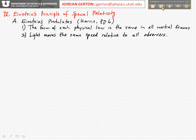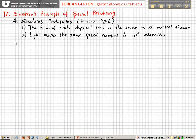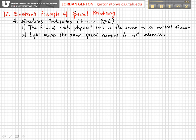Note that postulate two follows from postulate one if we accept the fact that the speed of light is a physical law. When Einstein formulated these postulates, he just assumed or inferred this, but it wasn't rigorously proven. Since then, there have been numerous experiments that have investigated this, and there has never been an experiment that has proven otherwise. So we now basically accept the notion that the speed of light is a physical law and that Einstein's postulates hold in certain special circumstances, which is why we call it special relativity.